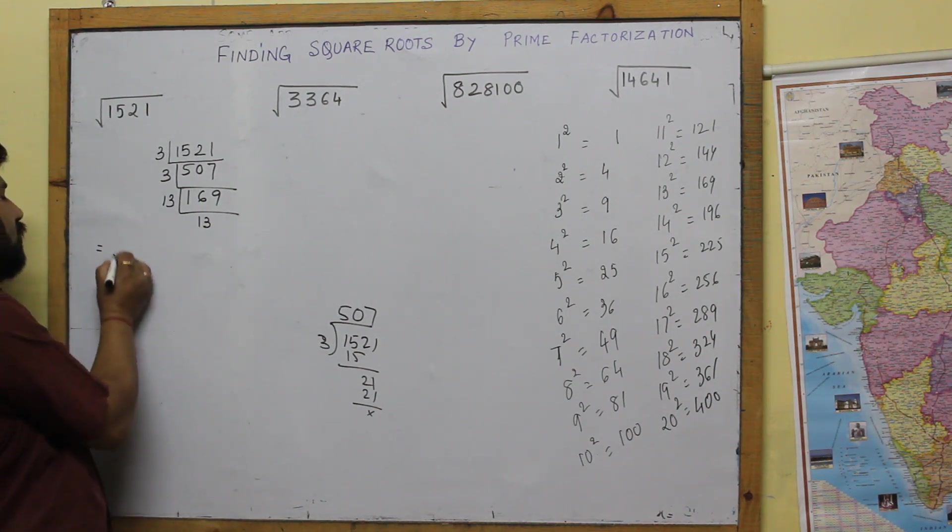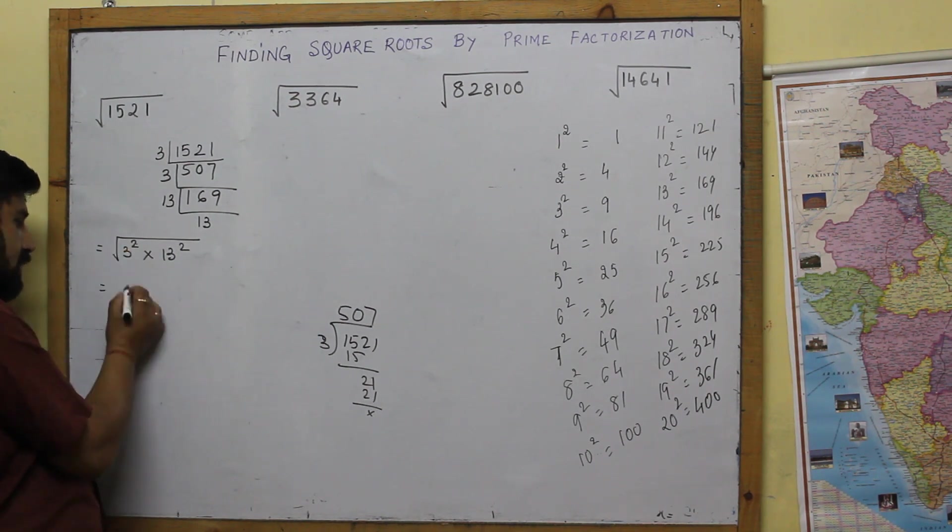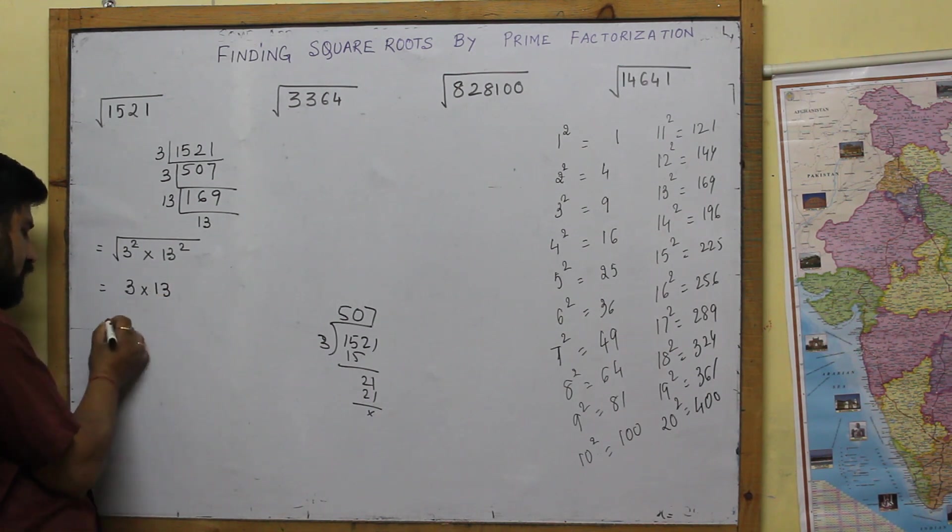So we got square root of 1521 as 3 square into 13 square. I told you square root and square cancels, so 3 comes out, 13 comes out and what's your answer? The answer is 39.